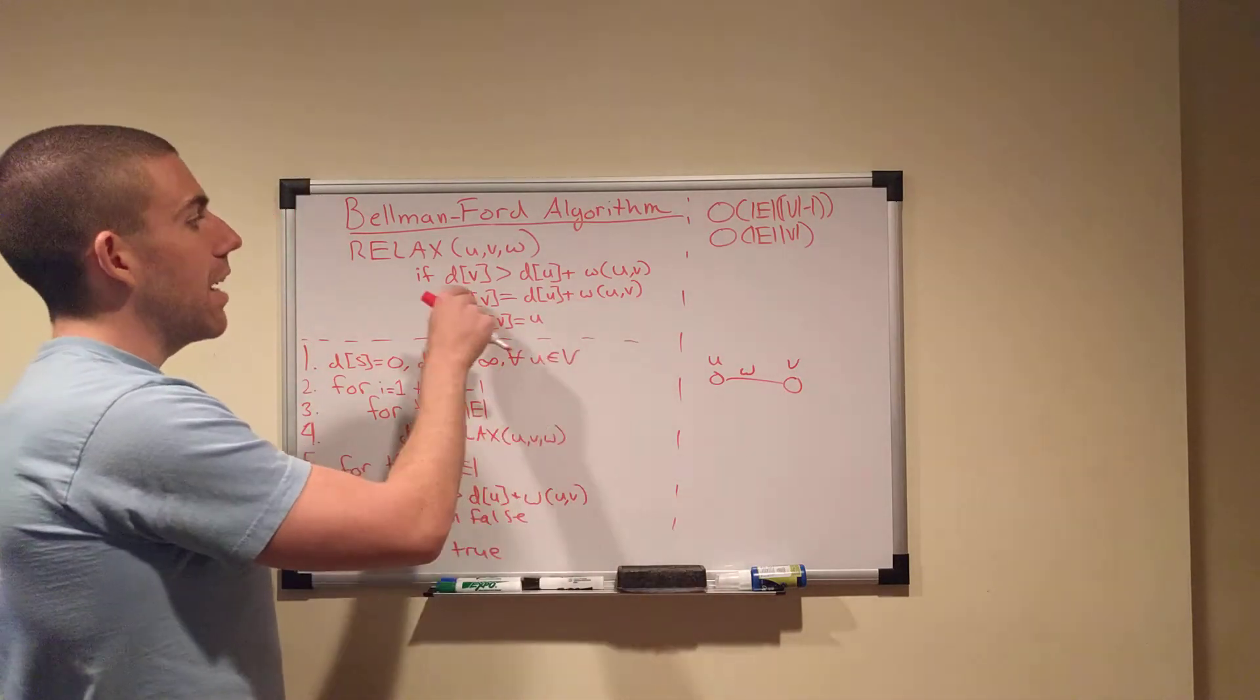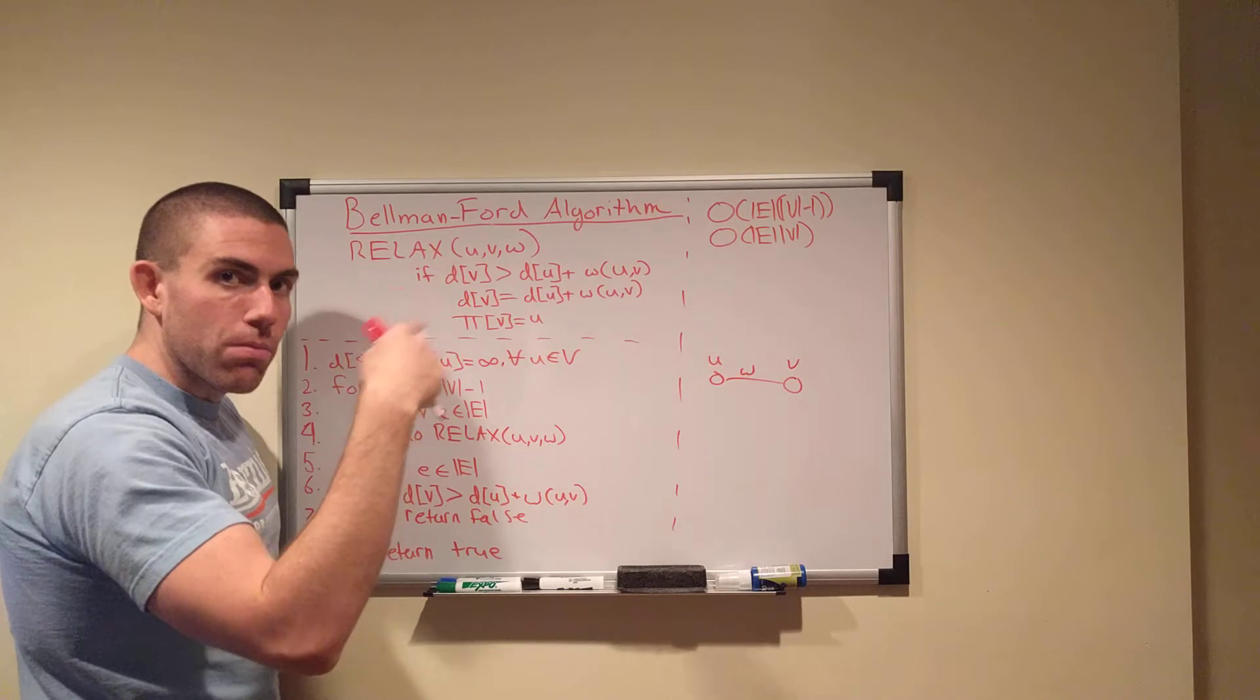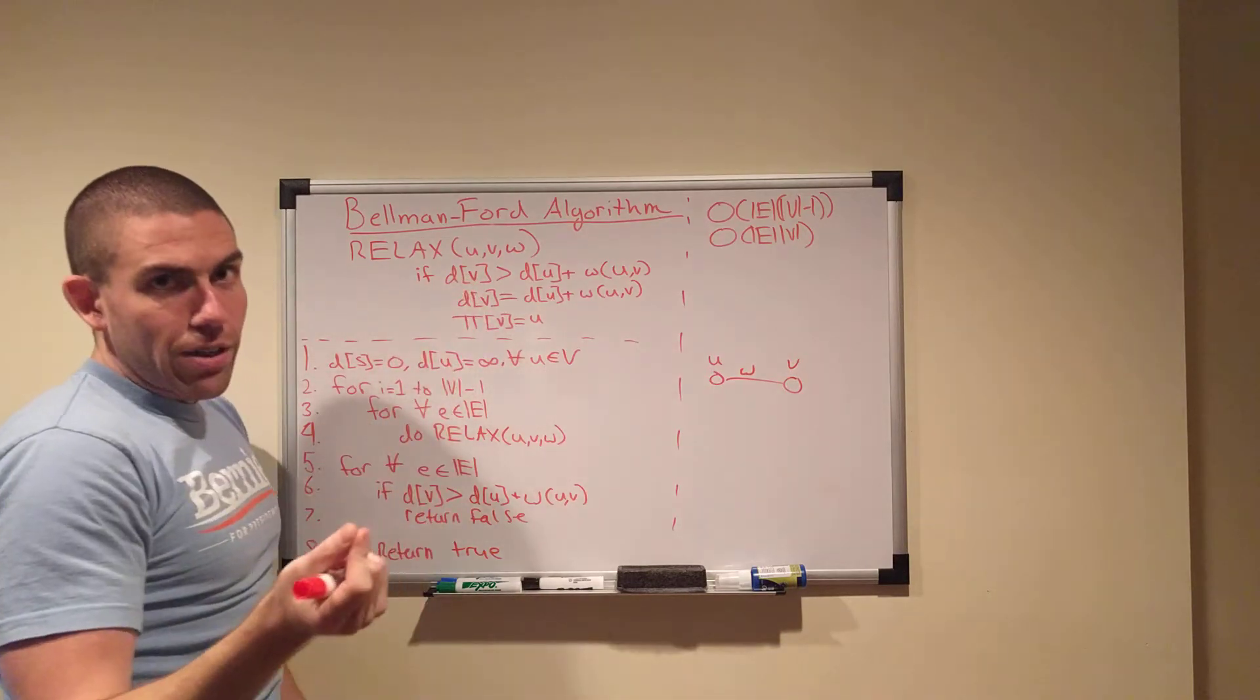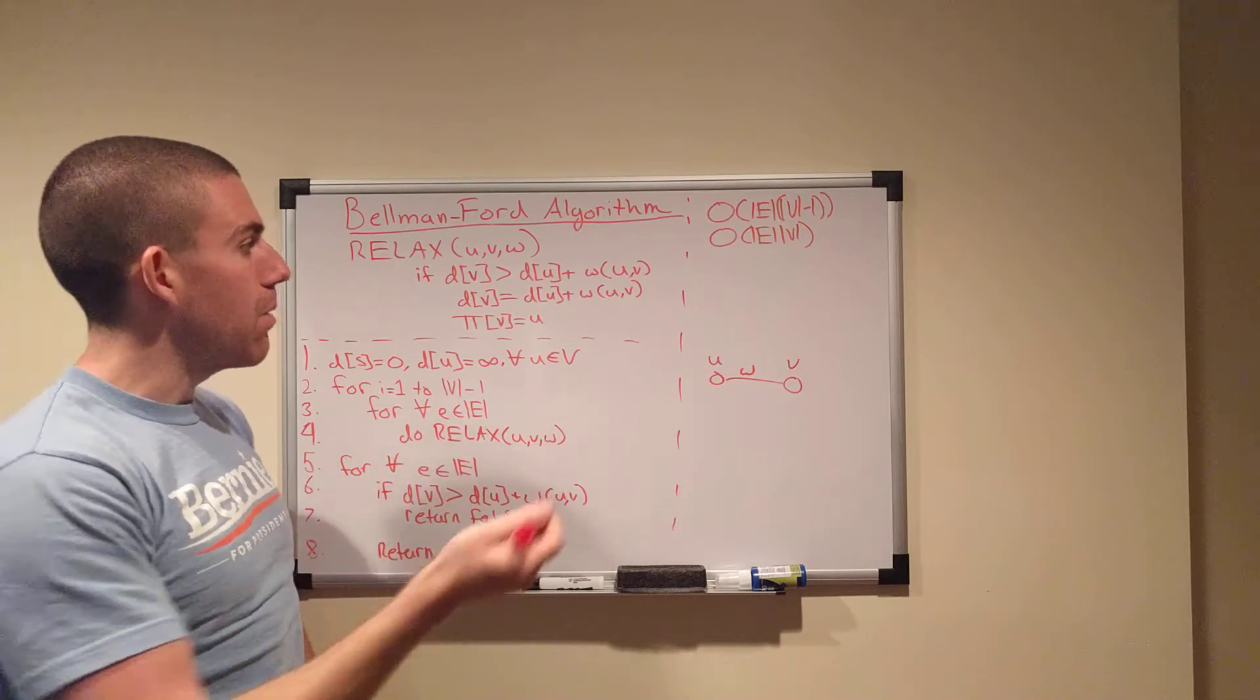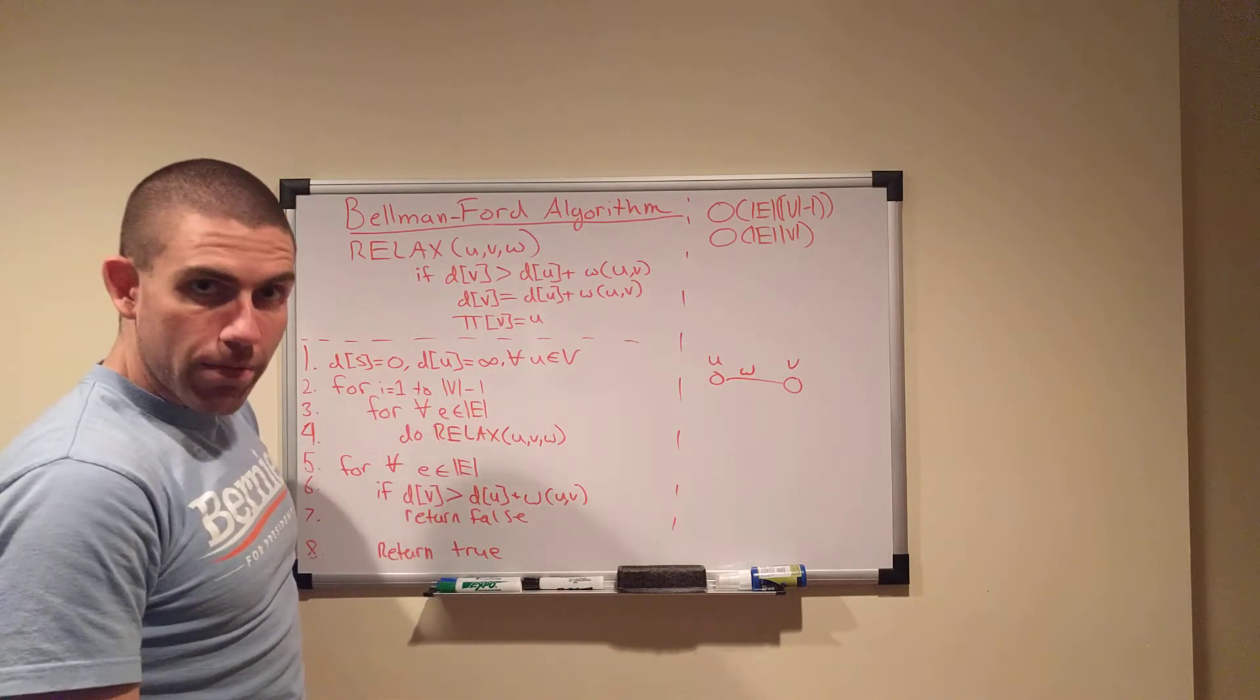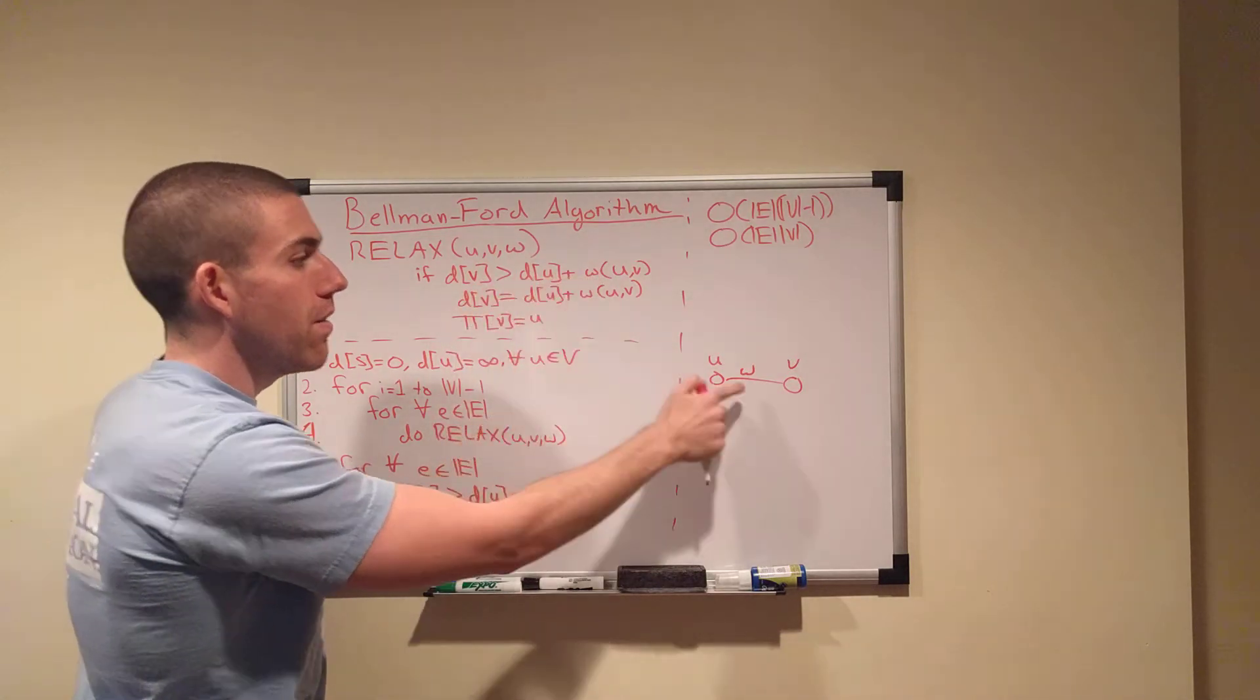And using that, it checks to see if the distance to V that we already have recorded. So it checks in a distance array that you're keeping updated with every iteration of the algorithm. It checks in a distance array to see if the distance that you already have recorded to V, so the weight of your current proposed shortest path, if you think of it that way, is bigger than if you were to go to V from U instead.